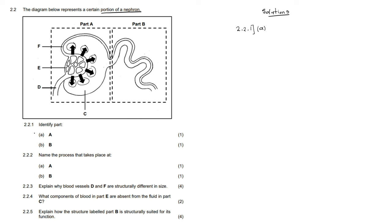So now they say we should identify part A. You can see that part A here represents this whole part that has got a cup shape. Most of the time in the nephron, something that has got a cup shape is connected to the Malpighian body. Part A is actually the Malpighian body because it includes all the parts F, E, D, and C.